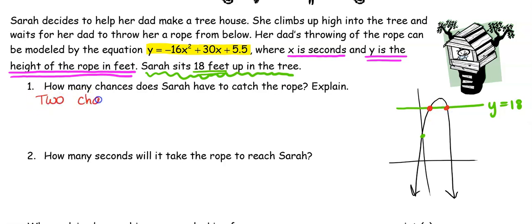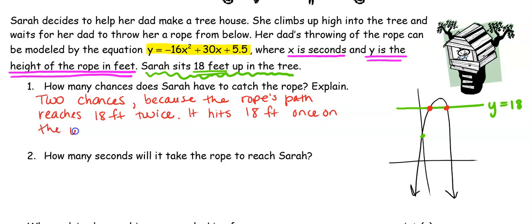We said there are going to be two different chances for her to catch that rope. Two chances. Because the rope's path reaches 18 feet twice. It hits 18 feet once on the way up and once on the way down. So again her dad is down here he throws it up it reaches 18 height right there and maybe she misses it. It's going to hit its maximum height and then it's going to come back down. So she has two different chances to catch that rope.